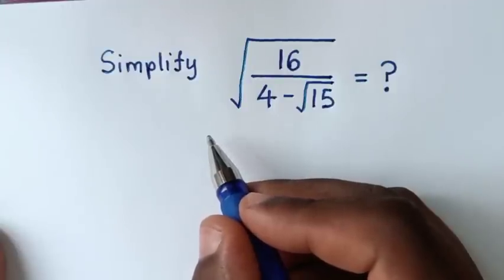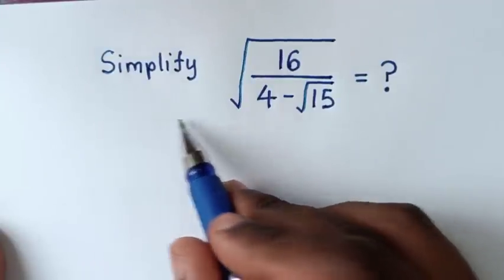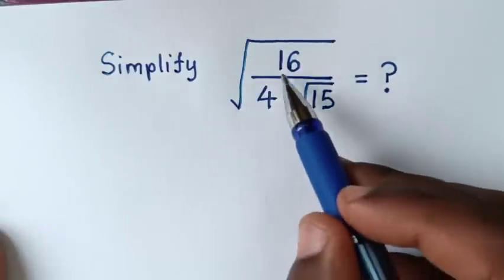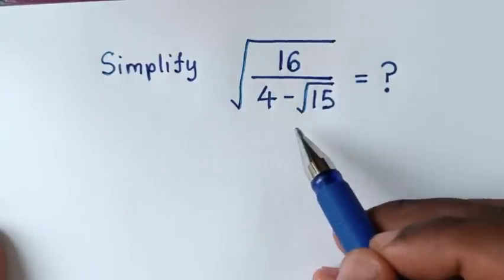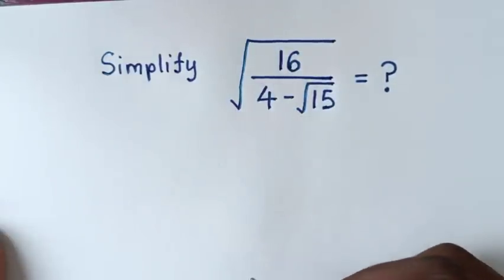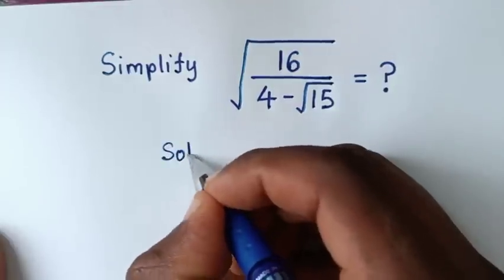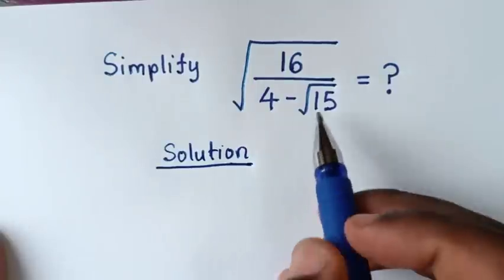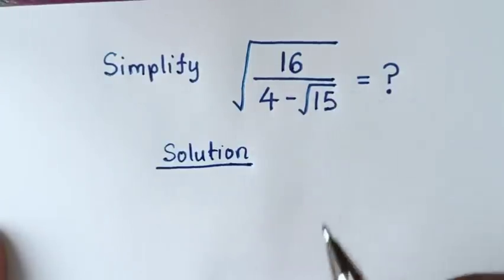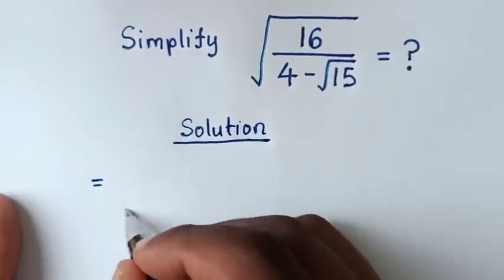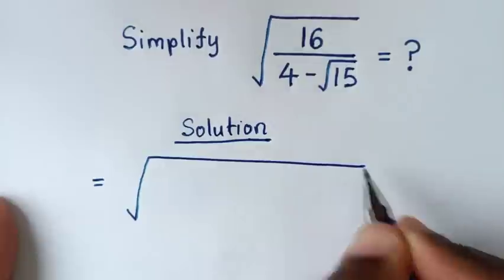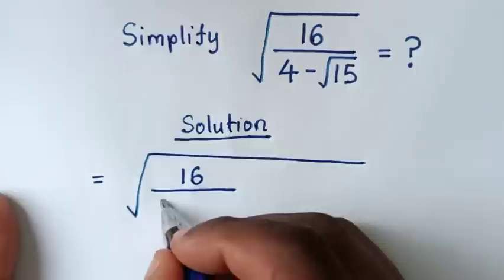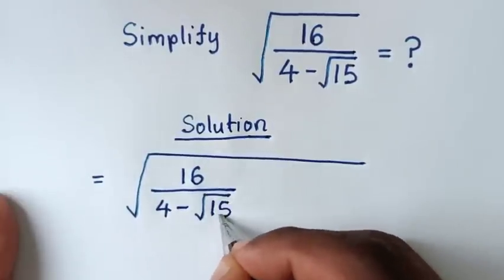Hello, you are welcome to solve this math problem by simplifying square root of 16 over 4 minus square root of 15. Now, solution. To simplify this, we start by rationalizing this denominator. So it will be equal to square root of 16, then over 4 minus square root of 15.